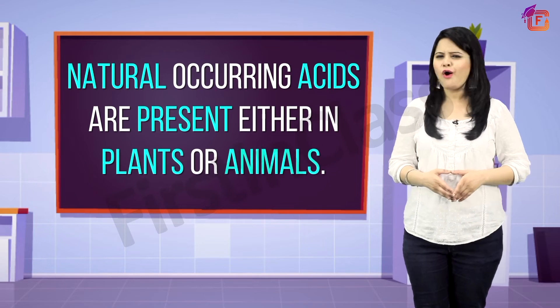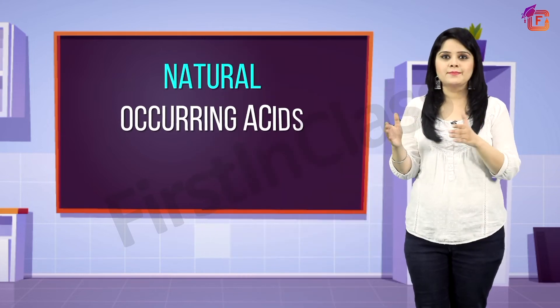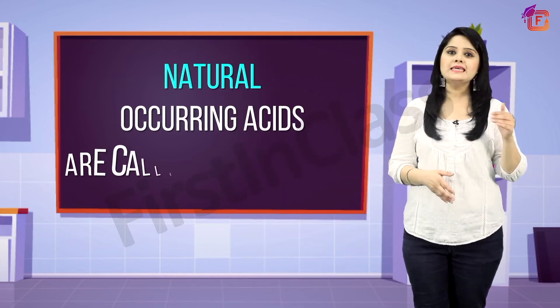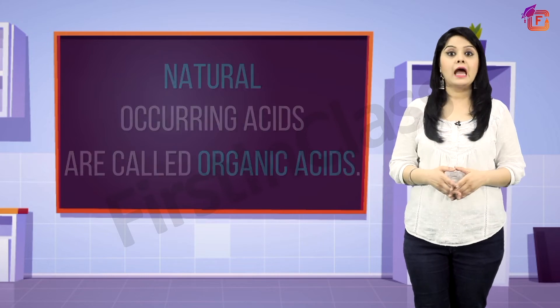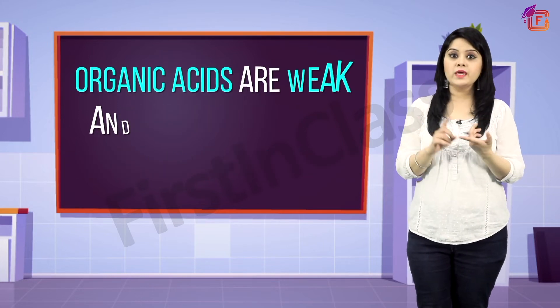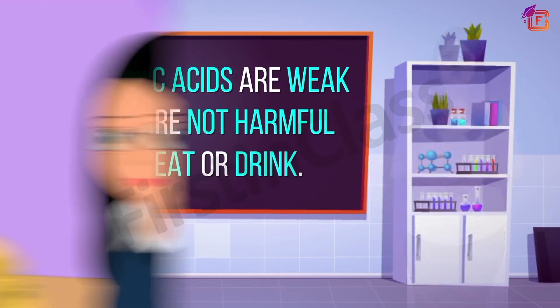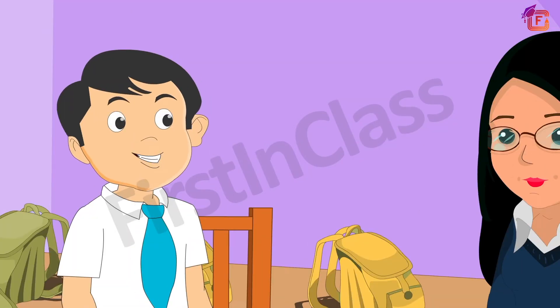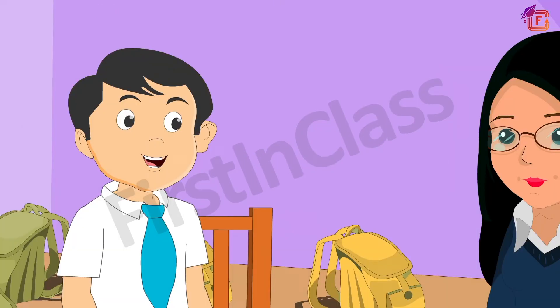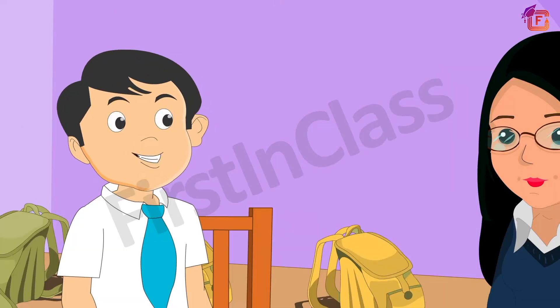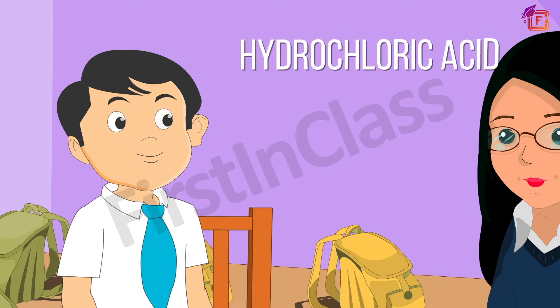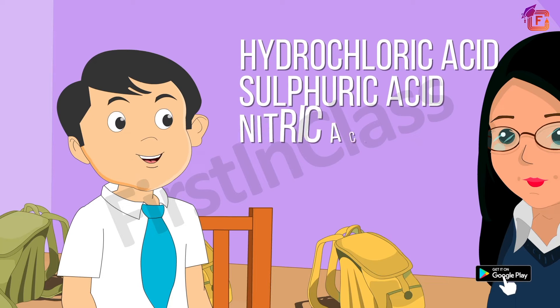Do you know what we call these acids which come from naturally occurring substances? Well, these are called organic acids. Organic acids are weak acids and are not harmful when we eat or drink them — that's why sour fruits are not harmful to us. When I go to my school lab, I see some other acids also: hydrochloric acid, sulfuric acid, and nitric acid.